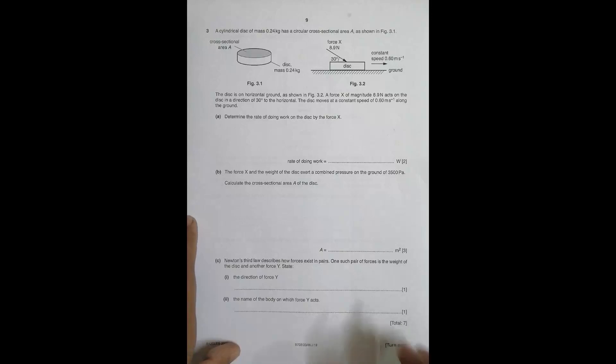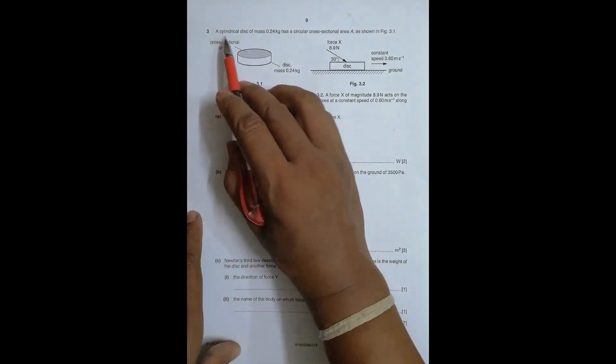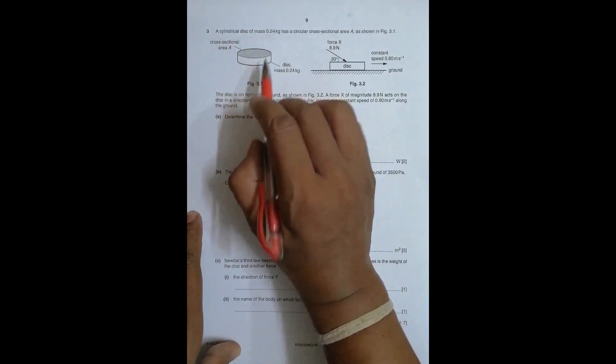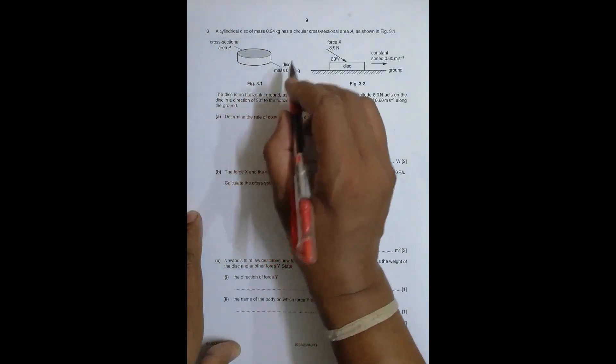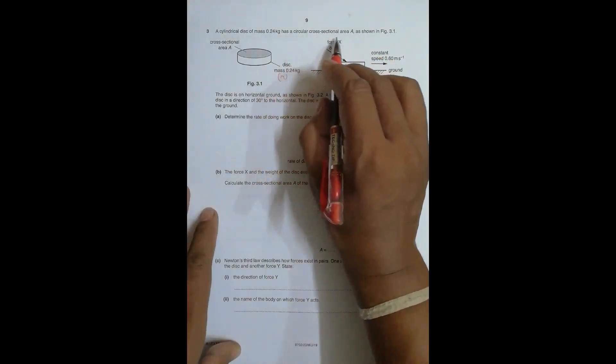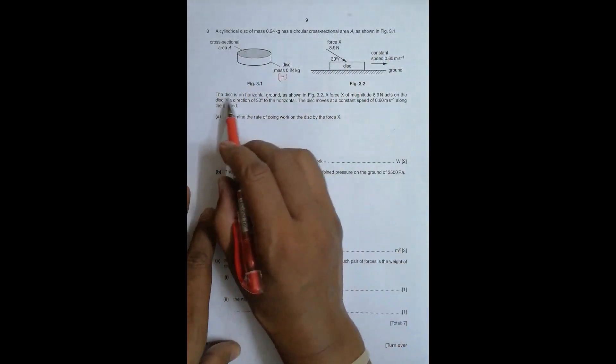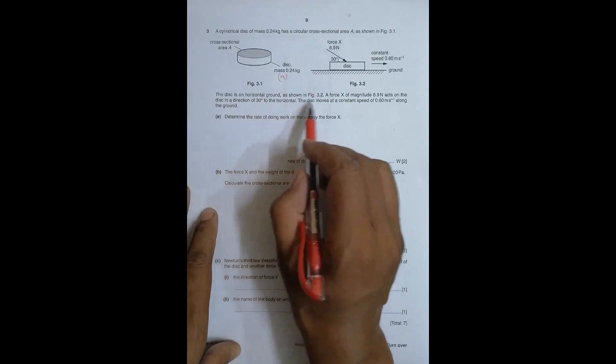This question says: a cylindrical disk of mass 0.25 kg and a circular cross-sectional area A, as shown in Figure 3.1. This is that disk. The disk is on the regular ground as shown in Figure 3.2.